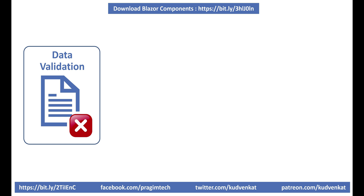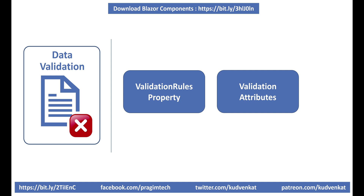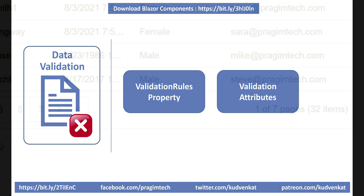There are two ways to validate data in a Blazor data grid: by using the validation rules property of a grid column component, and by using validation attributes in the System.ComponentModel.DataAnnotations namespace.